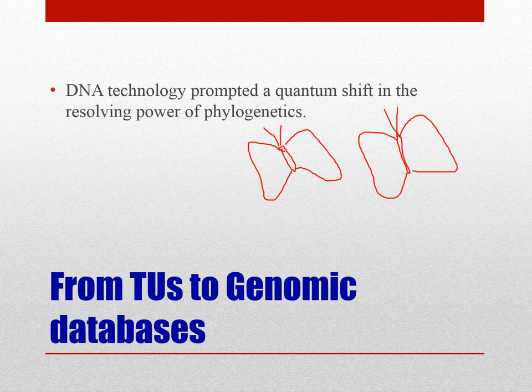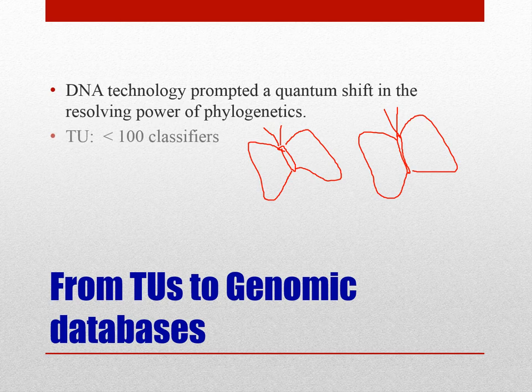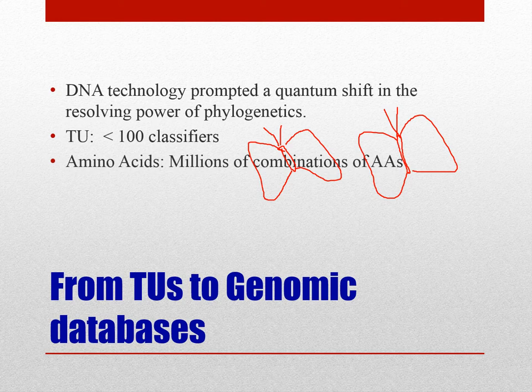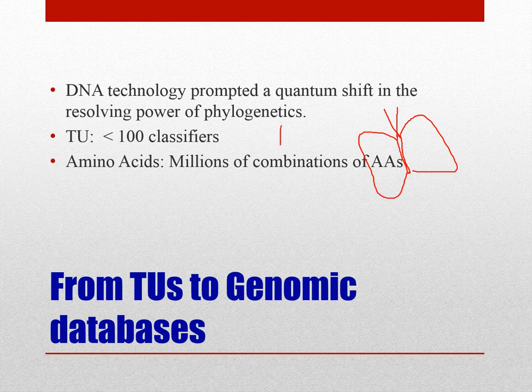DNA technology has prompted a quantum shift in the resolving power of phylogenetics. The availability of large amounts of DNA-based data allows us to classify to a very fine level. For example, traditional phenotypic classification is based on fewer than 100 classifiers, whereas in the case of amino acids we have millions of combinations that can be used to classify or resolve the phylogeny of a particular species.